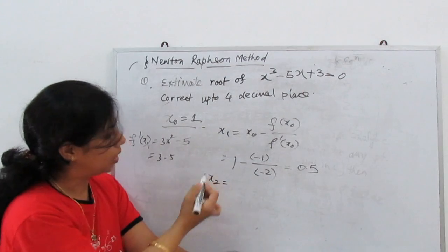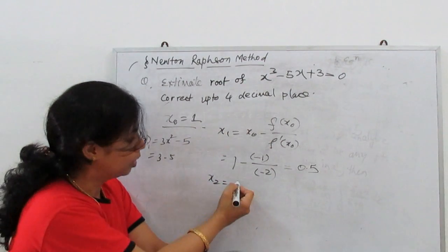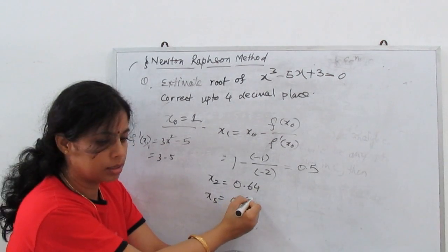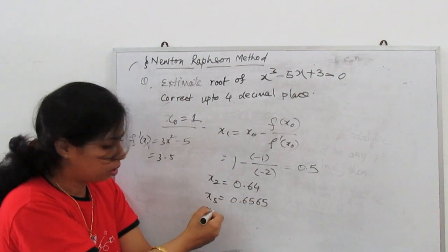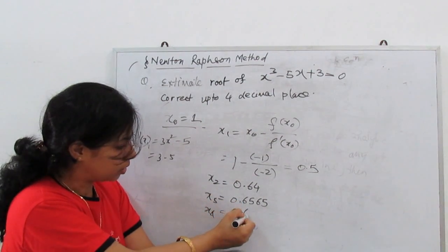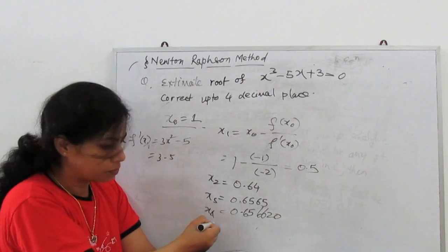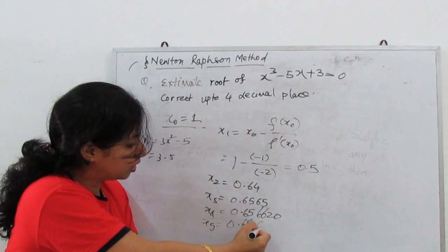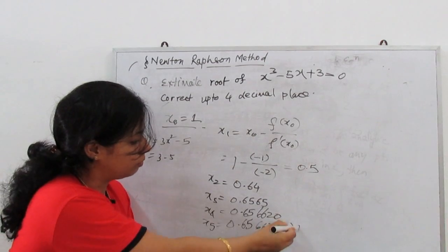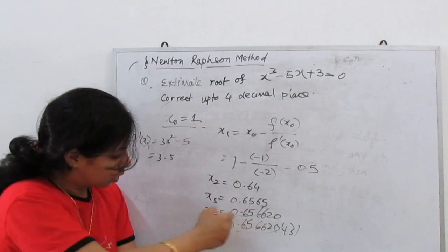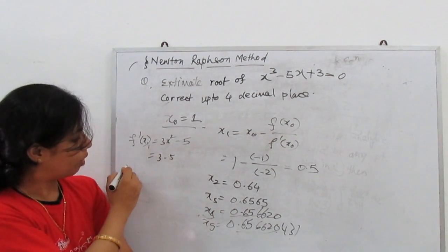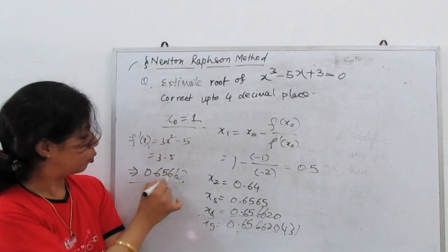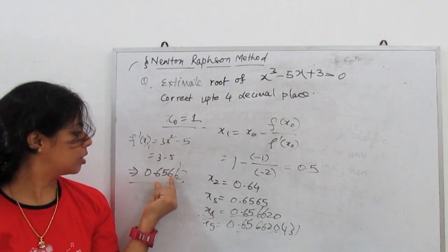Next, x₂: substitute x₁ and find out — the root comes to 0.64. Then x₃ = 0.6565, x₄ = 0.656620, and x₅ = 0.656620. The value repeats, so our final solution is 0.6566 up to 4 decimal places.